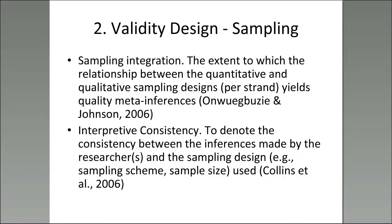The decisions you make relative to your sampling scheme and sample size influence the degree that the meta-inferences you draw — conclusions from all the different strands of the study — are of quality. Did you collect quality data and analyze it appropriately? And to what degree can you generalize based on your preference for a particular type of generalization? That's referred to as interpretive consistency.